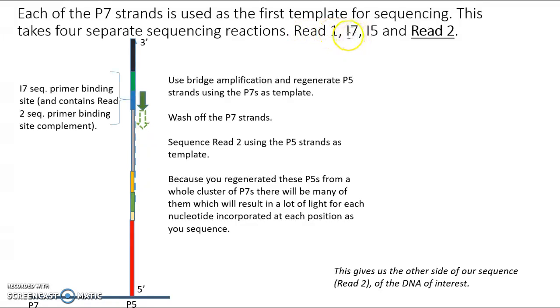And that's the end of our four steps. We've sequenced Read 1, the index 7, the index 5, and Read number 2. And this index information, by the way, is also going to give us the ability to relate the Read number 2 data back to the original sample ID to which the DNA of interest belonged.